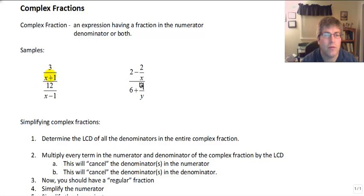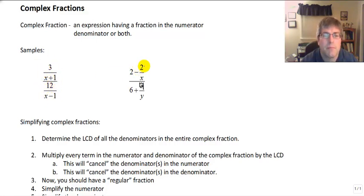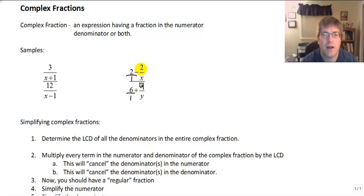We have 3 over x plus 1, all divided by 12 over x minus 1. So I've got a fraction in both the numerator and the denominator. Here's another example: 2 minus 2 over x, all divided by 6 plus 4 over y. Keep in mind this 2 is 2 over 1 and the 6 is 6 over 1, so you can see there are a couple of different terms that are both fractions. This second example is a little more complex because I have two terms in the numerator and two terms — 6 and 4 over y — in the denominator.